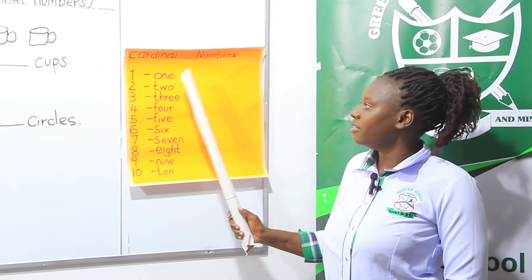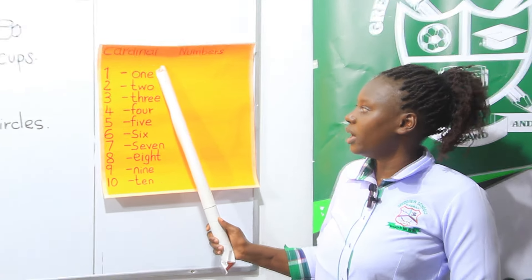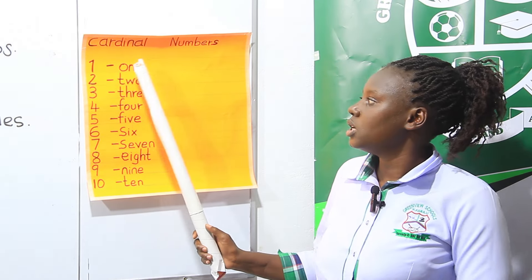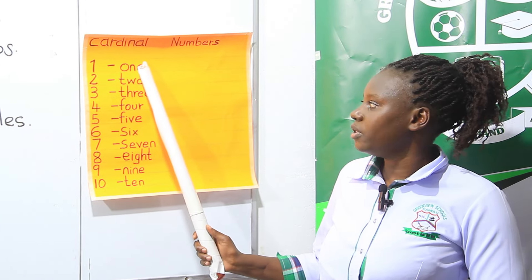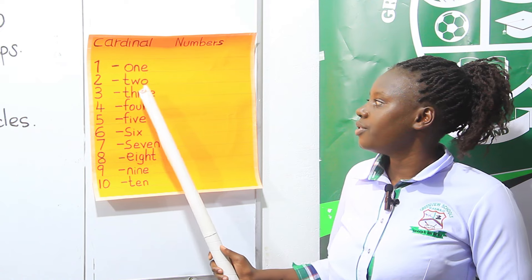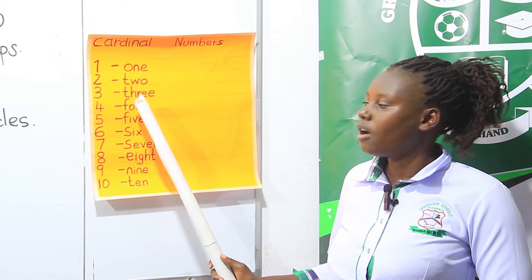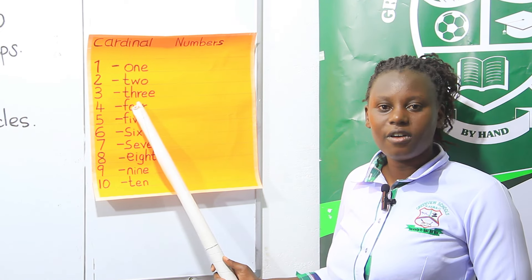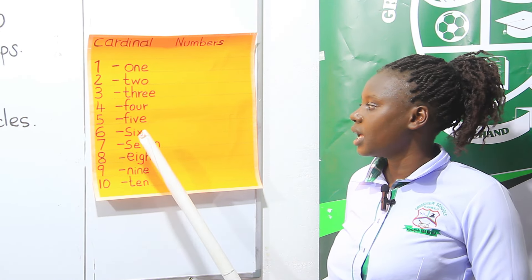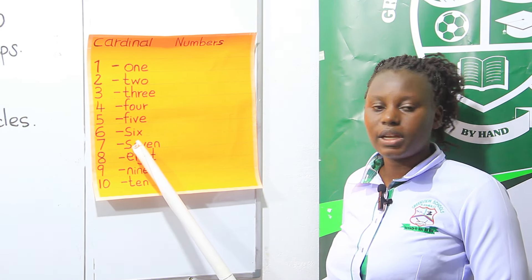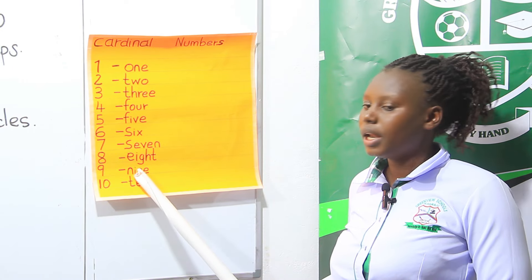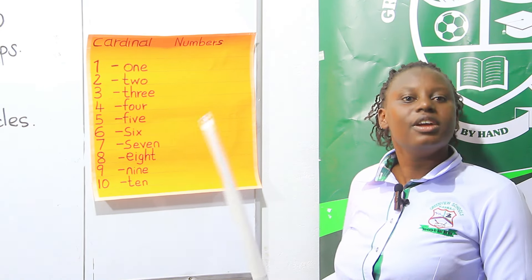We are having number one in symbol and in words. So we are having: one, two, three, four, five, six, seven, eight, nine, and ten.